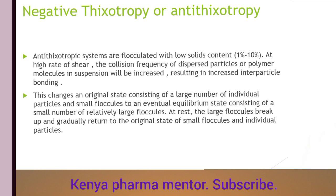For a shear rate below 30 per second, the magma shows normal thixotropy, but above 30 per second it will show negative thixotropy — a higher rate of losing viscosity. What is the reason behind this negative thixotropy?